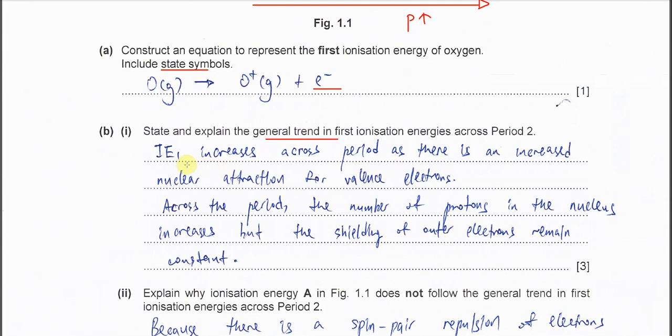That's the main concept when you want to explain the general trend. So first, IE increases across period as there is an increase in nuclear attraction for the valence electron. The increase in nuclear attraction because the proton number increases. So this one is the statement. So it's increased because of the attraction is greater.